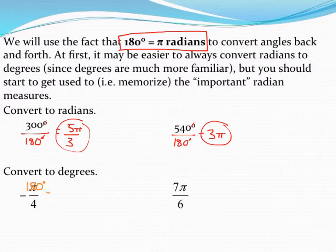Negative 180 divided by 4 comes out to be negative 45. Don't forget to put your degree symbol on here. If I don't see a degree symbol, I'm going to assume it's radians. I know that's not what you want. So make sure you have that degree symbol on there.